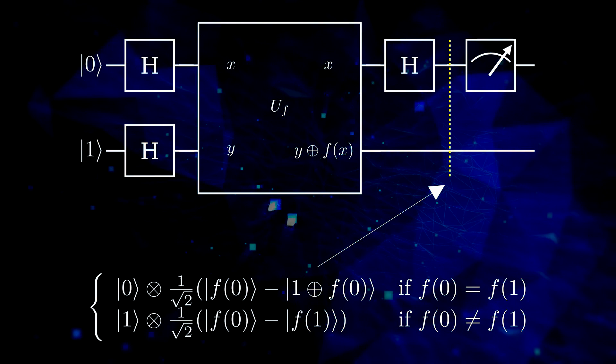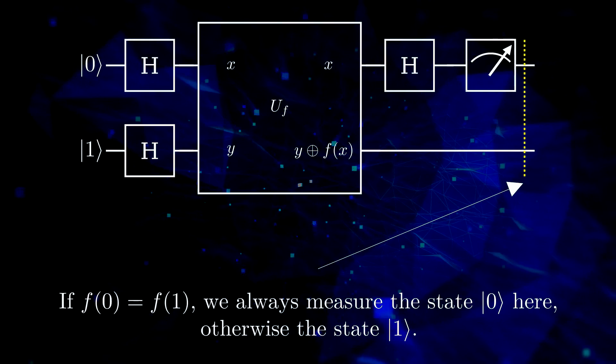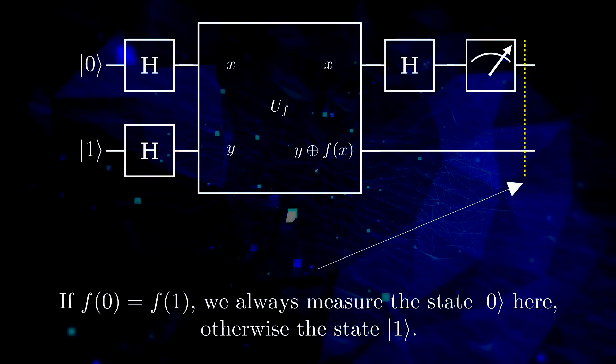Upon measuring, we get the zero state with probability one, exactly if the function is constant. And we get the one state with probability one, if the function is not constant.